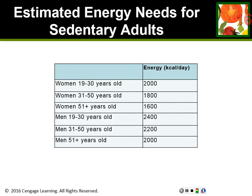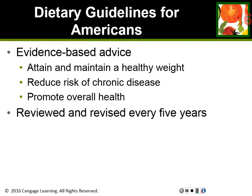These are general estimated calorie and energy needs. Now let's talk about the Dietary Guidelines for Americans. These are key recommendations on what a person needs to eat to stay healthy. They are designed to help people achieve and maintain a healthy weight, reduce the risk of chronic diseases like diabetes, heart disease, and high blood pressure, and to promote overall health through diet and physical activity. They are designed for everyone aged two and older.